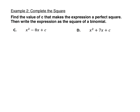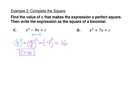Let's try two more. Problem C has a b value of negative 8. We do b divided by 2 squared: negative 8 divided by 2 quantity squared. Simplify negative 8 divided by 2 to negative 4, and when we square negative 4 we get positive 16. So c is 16. That means we rewrite this as x squared minus 8x plus 16, and that factors to x minus 4 quantity squared.